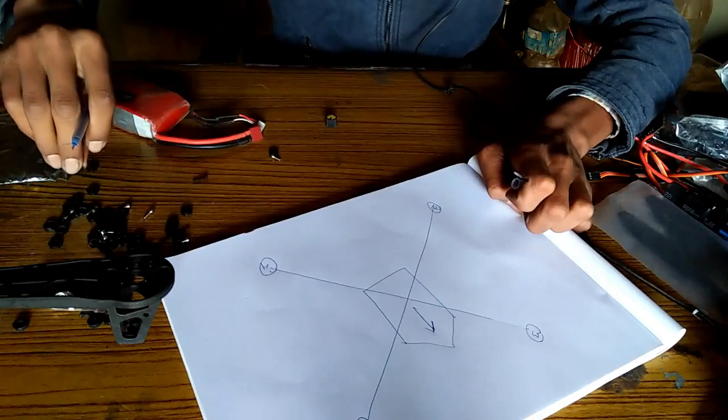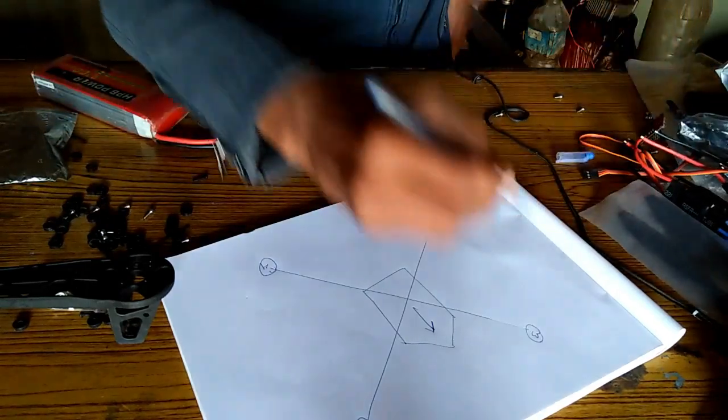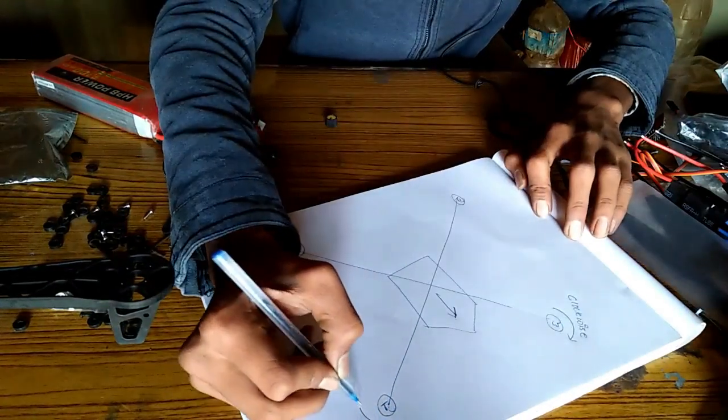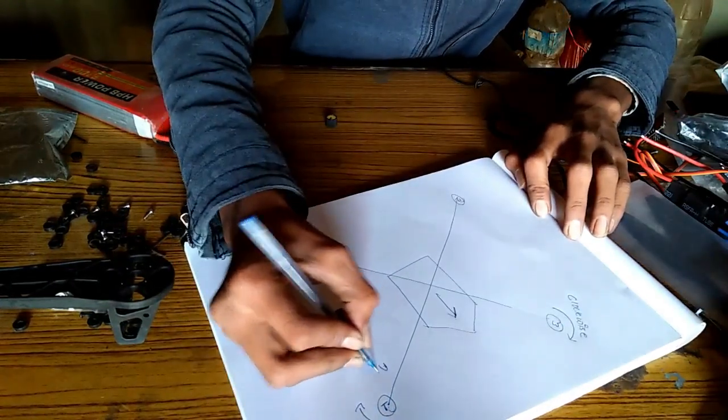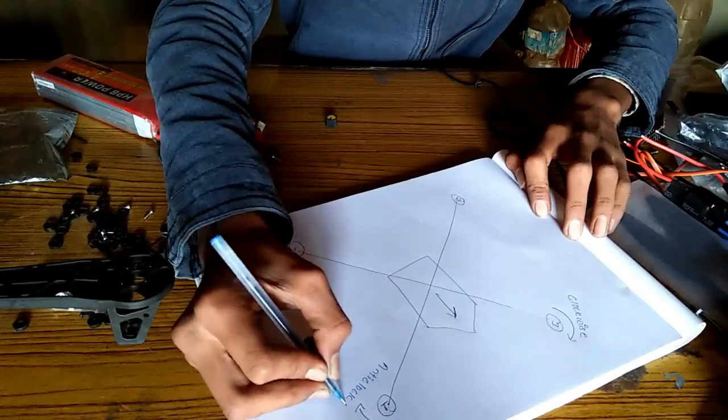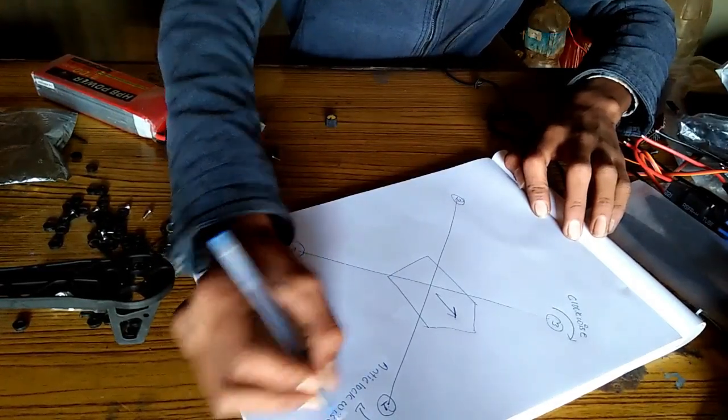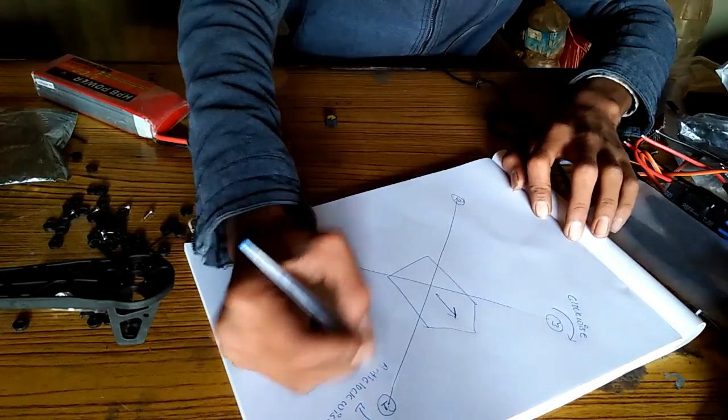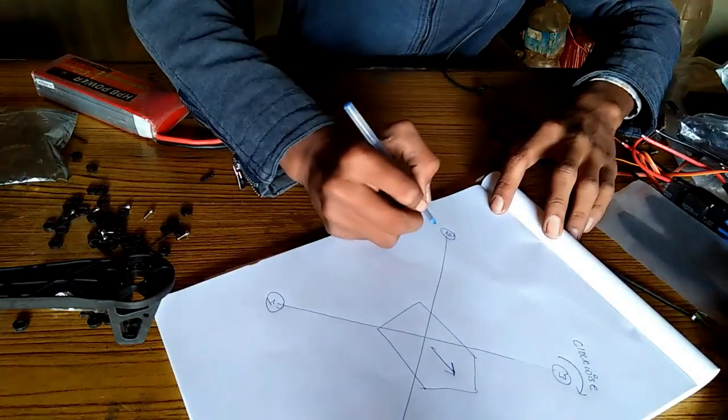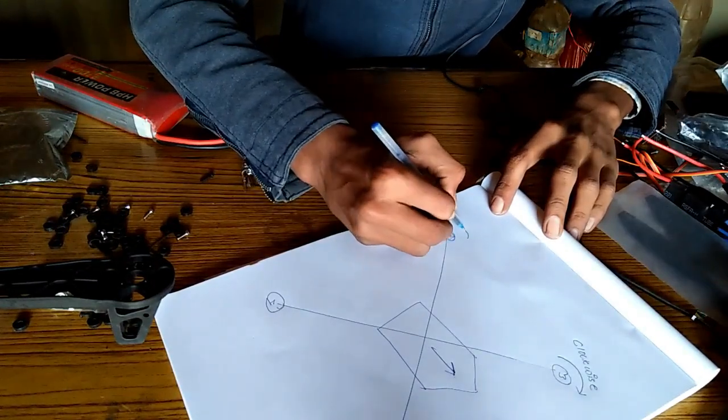How it rotates: this rotates in the clockwise, this rotates anti-clockwise, and the opposite to them always rotate in the same. So this is anti-clockwise, so this one is the third motor, this also rotates in the anti-clockwise.